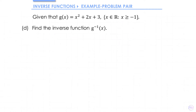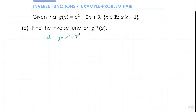In part d we need to find the inverse function. Our start point when we find any inverse function is to let y equal the original function. Then we rearrange to make x the subject. This can be quite tricky because you can't simply factorise x. To make it so that x only appears once, all we need to do is complete the square, which we've already done in part a.